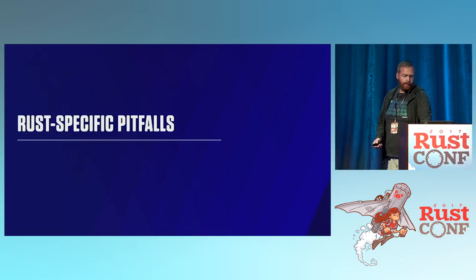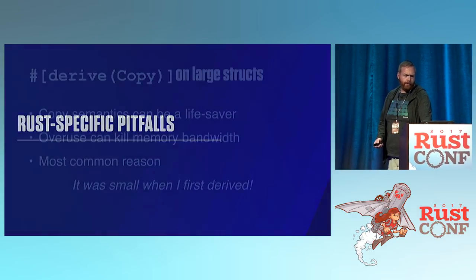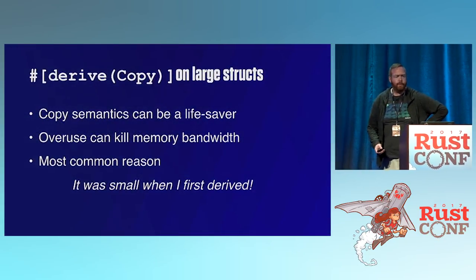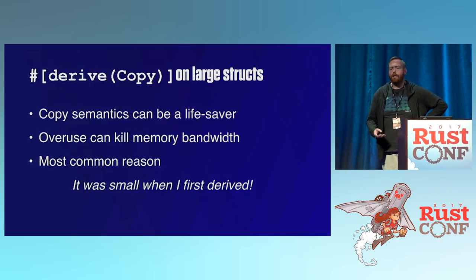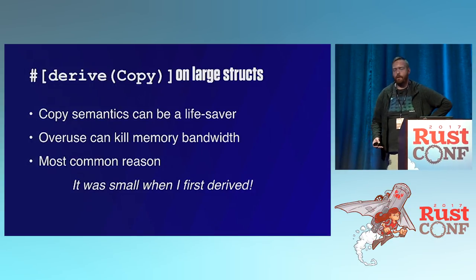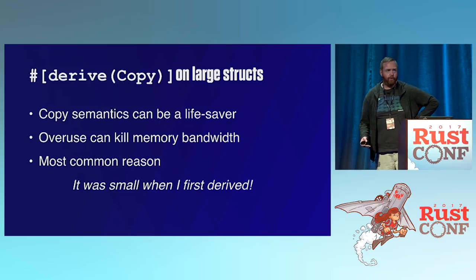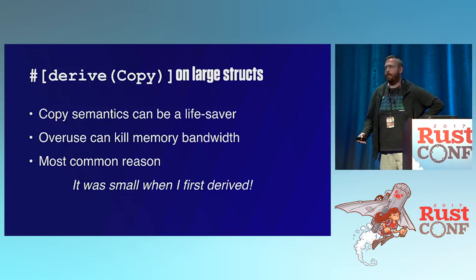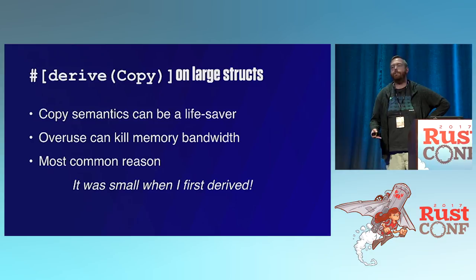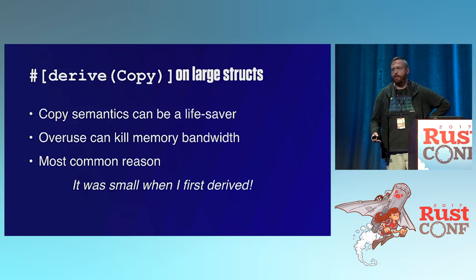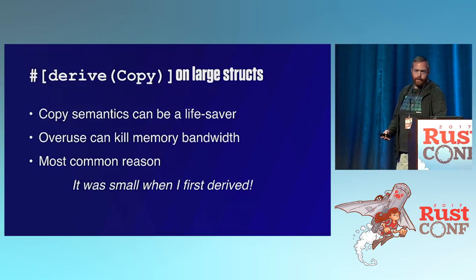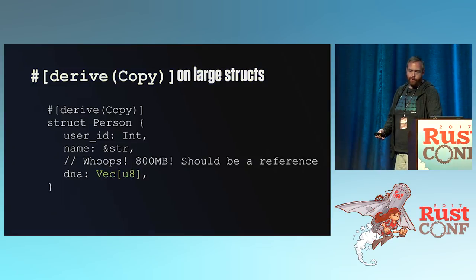Now let's talk about some Rust-specific pitfalls. A big one is deriving Copy on large structs. Copy makes your programs more ergonomic and can be a real lifesaver, but if you overuse it you can accidentally kill your DRAM bandwidth. The great thing about clone is it's explicit, but copy is implicit. The most common issue is: it was small when I started. Here's an example — someone makes a person struct with an int and a string reference, then someone adds the user's entire DNA — 800 megabytes — which should be a reference or not there at all.